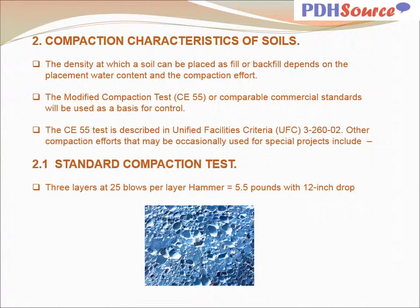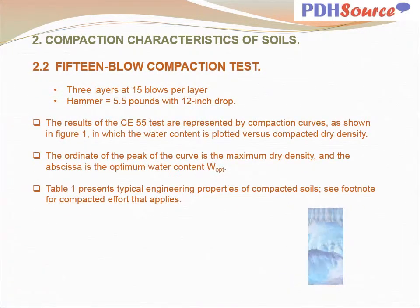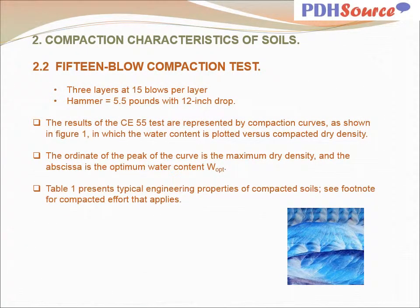Other compaction efforts occasionally used for special projects include the standard compaction test — three layers at 25 blows per layer, hammer at 5.5 pounds with a 12-inch drop — and the 15-blow compaction test — three layers at 15 blows per layer, hammer weight 5.5 pounds with a 12-inch drop. The results of the CE 55 test are represented by compaction curves in which water content is plotted versus compacted dry density. The ordinate of the peak of the curve is the maximum dry density and the abscissa is the optimum water content. Table 1 presents typical engineering properties of compacted soils.